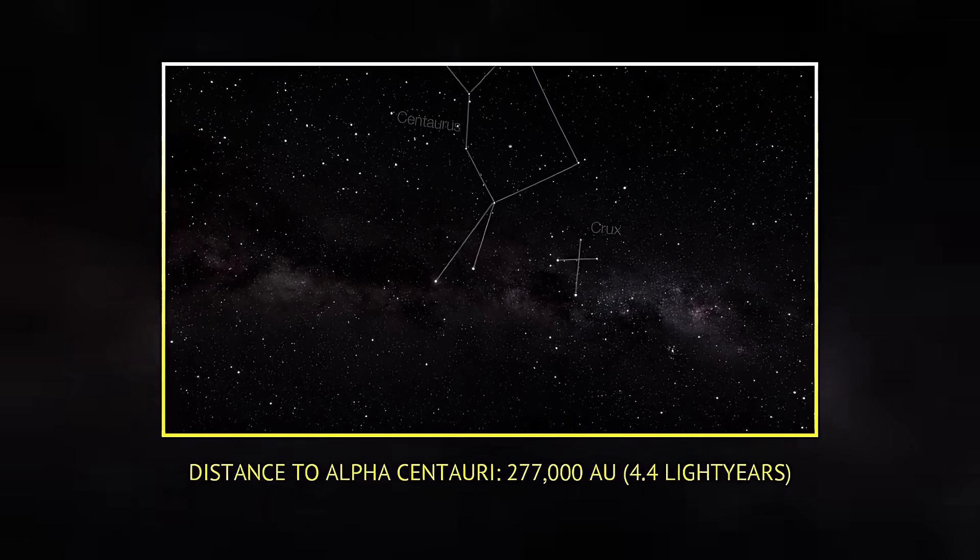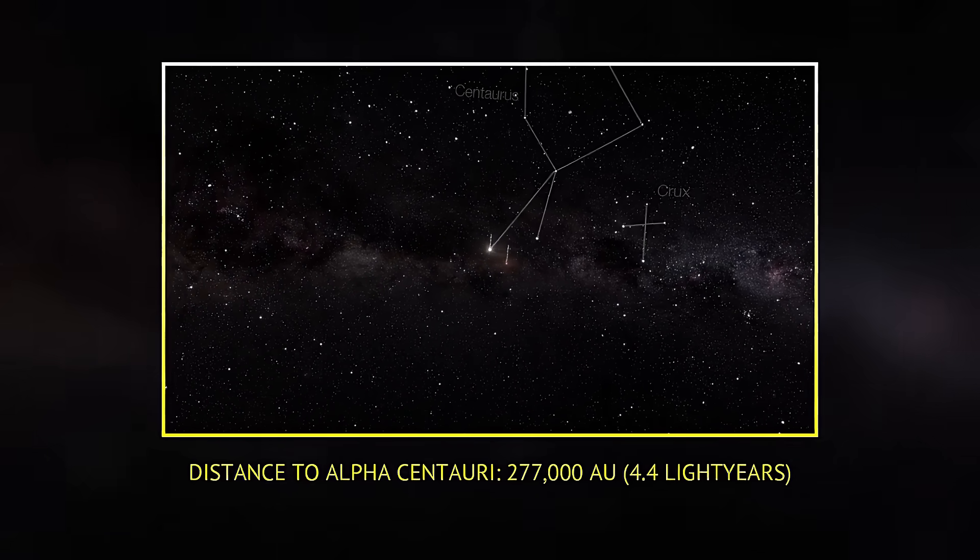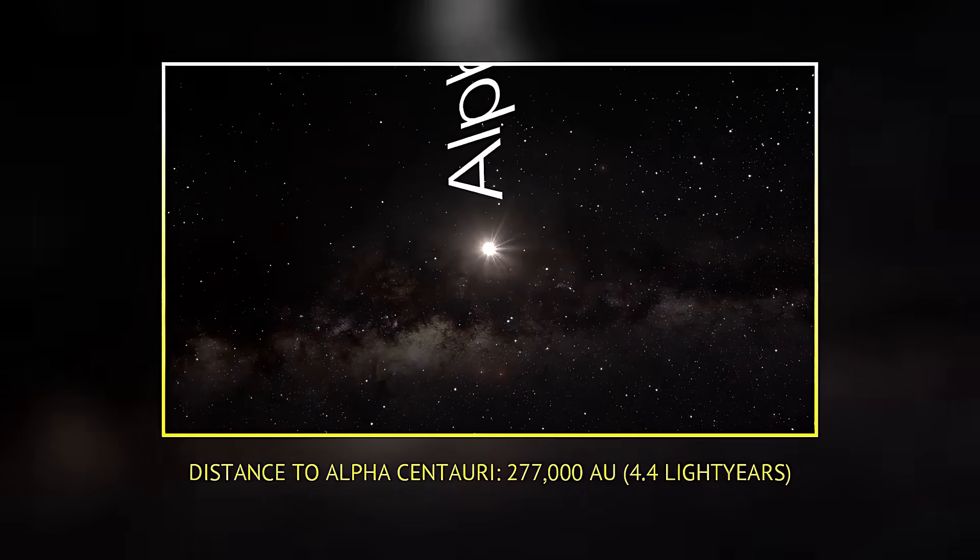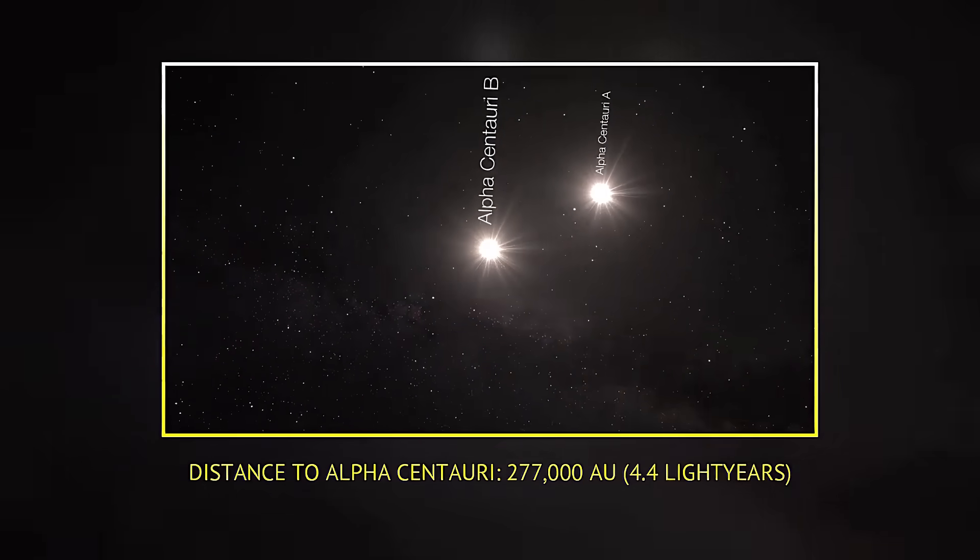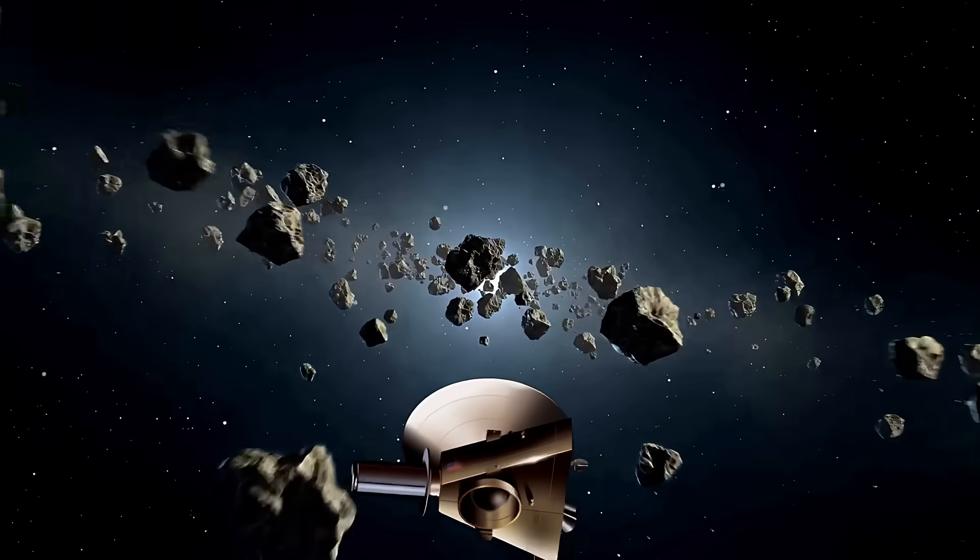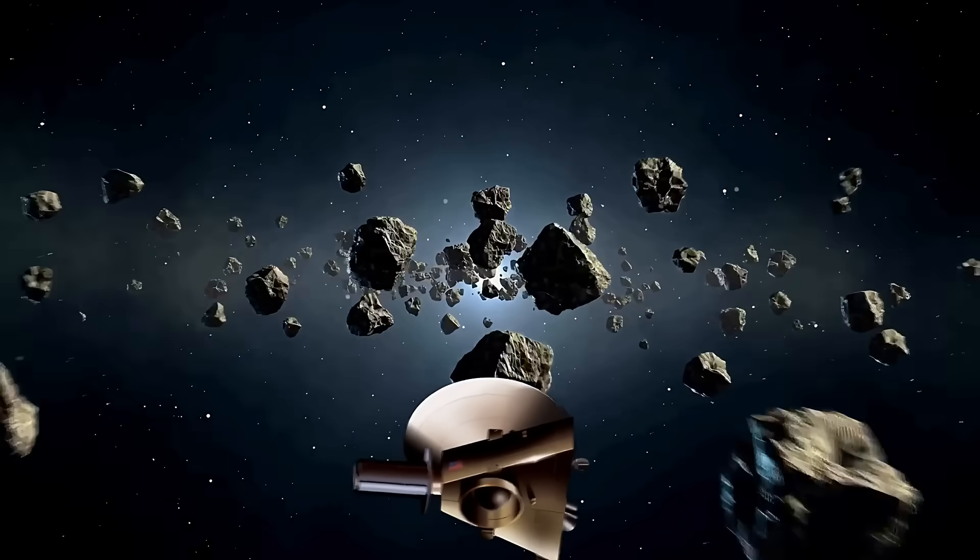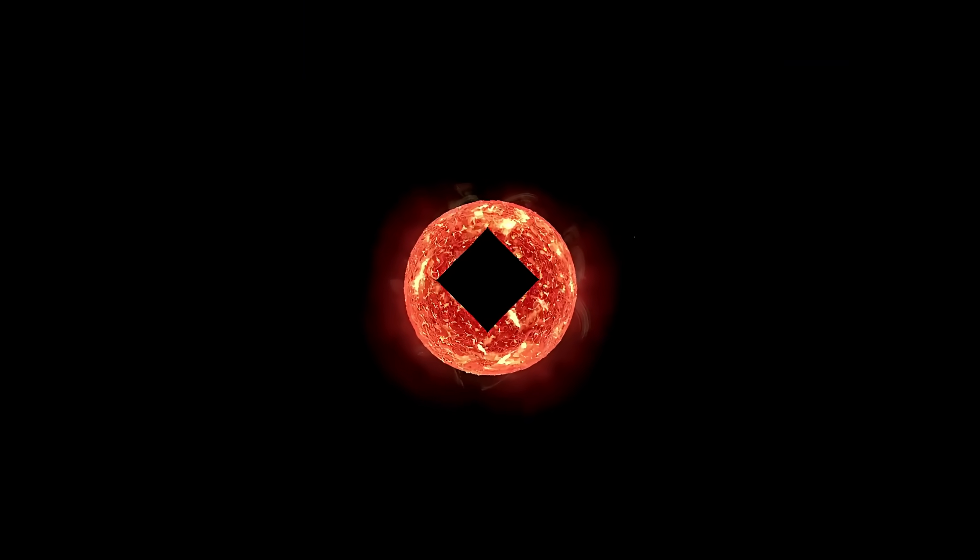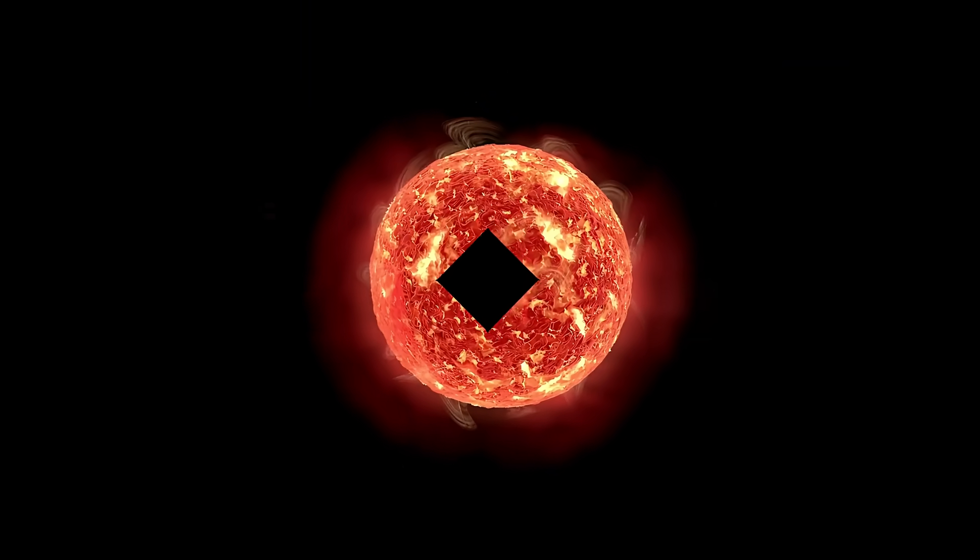By contrast, the distance to Alpha Centauri, our closest stellar neighbor, is an astounding 277,000 astronomical units equivalent to 4.4 light years, about 7,000 times farther than Pluto. At New Horizons speed, it would take an incredible 70,000 years to reach Alpha Centauri. So yeah, getting a spacecraft to another star is a monumental challenge.